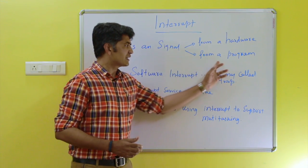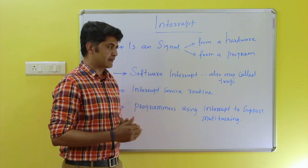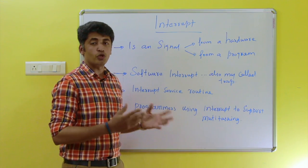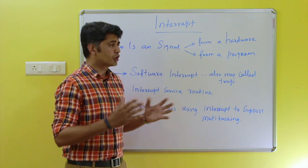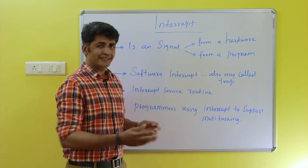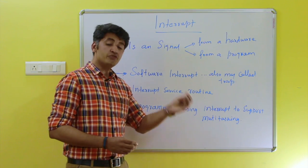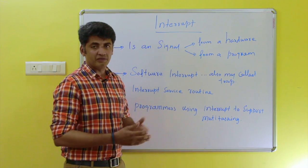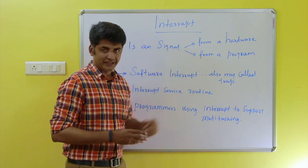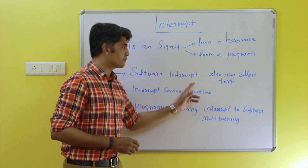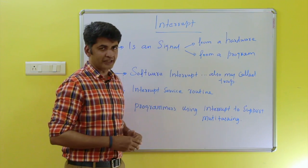For example, considering program execution: if the program faces any error — say, if any I/O device is not working or the I/O operation is not executed — then that particular program execution may generate a signal. An error signal will be generated, and that signal comes under a software interrupt. A software interrupt is also called a trap — trap is another name for a software interrupt.